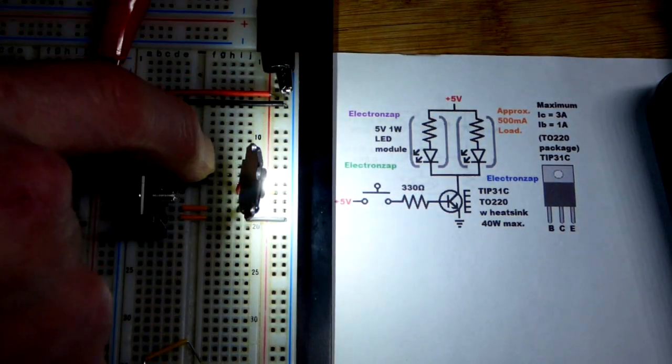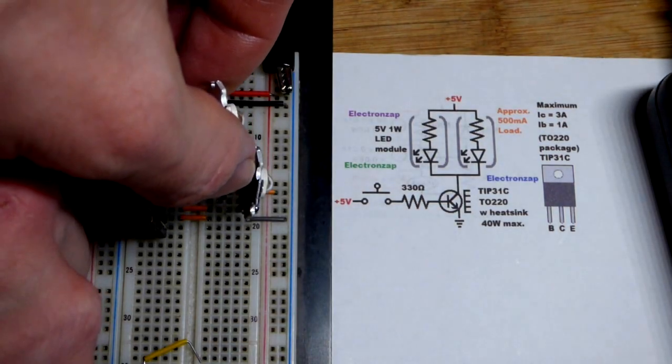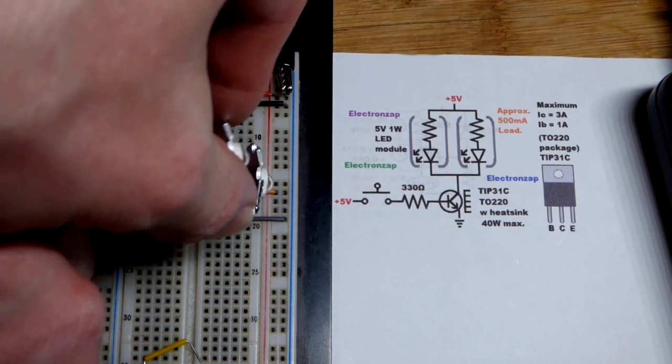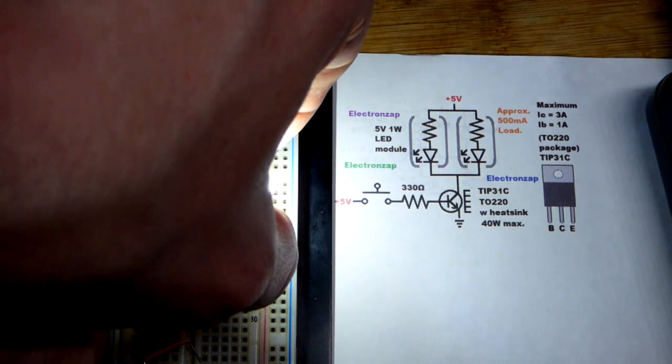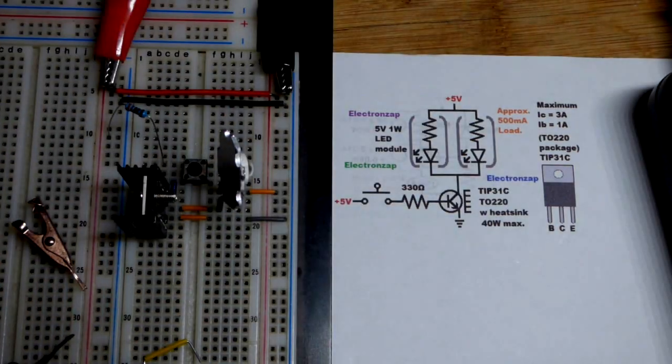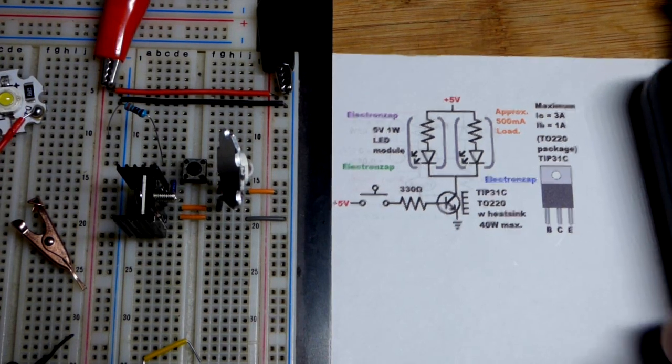Doesn't matter which one I pluck, but you're going to see there the light went way down. Turn that off, plug that back in, turn them on. And now I'll pluck the little one and there you can see it's not as bright as it is with the two of them. So it really makes a big difference to do the two of them.